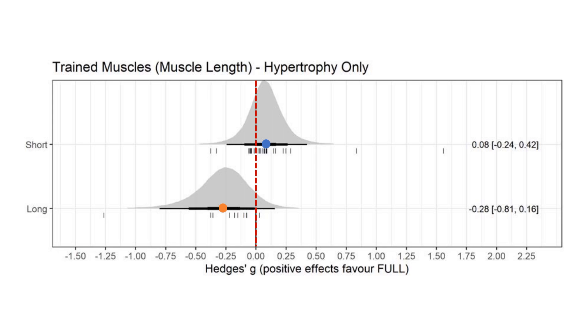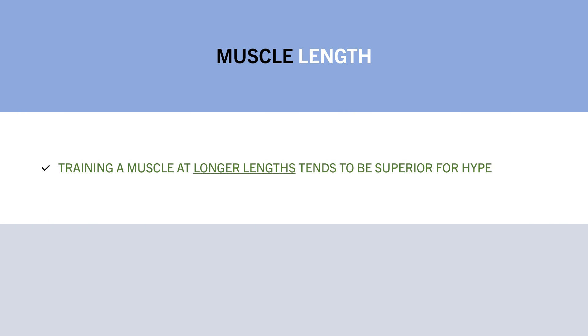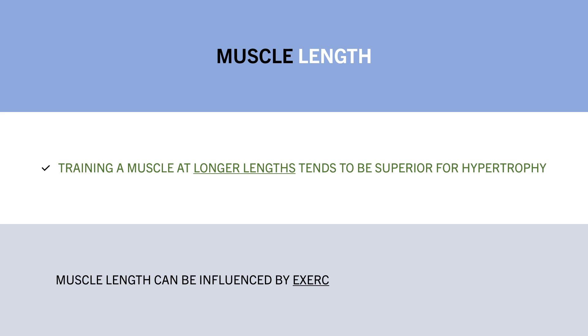One reason for these findings is likely due to the influence of muscle length on hypertrophy. When training a muscle at a longer length, we generally see superior growth compared with training the same muscle at a shorter length, assuming all other factors are equated. This is seen both via the evidence surrounding range of motion as well as exercise selection.